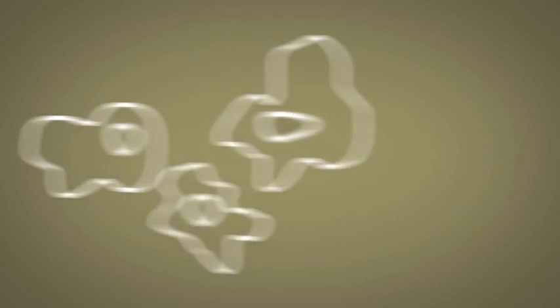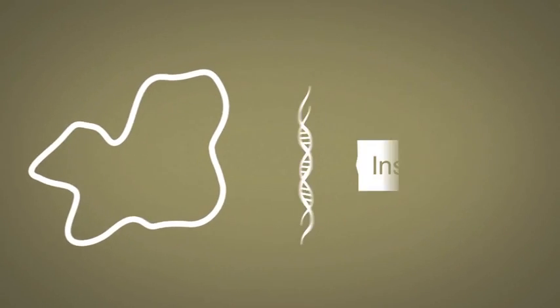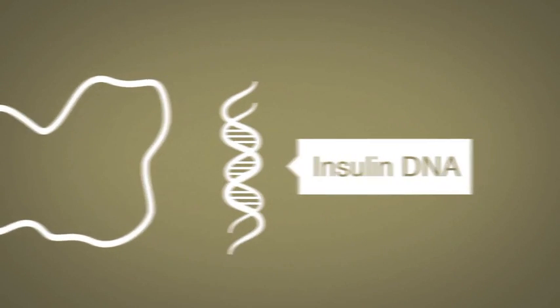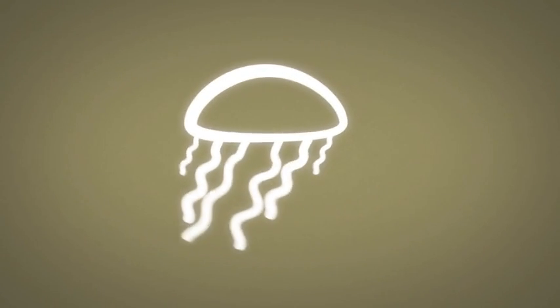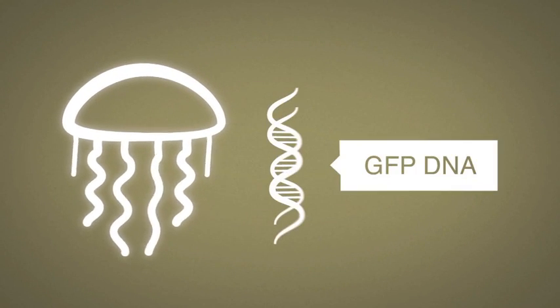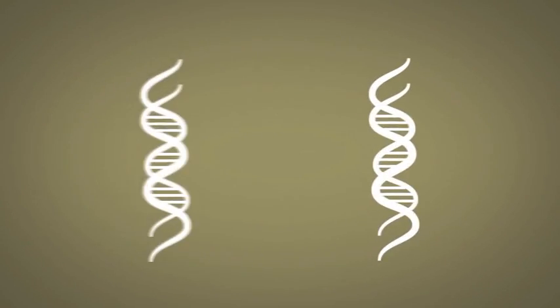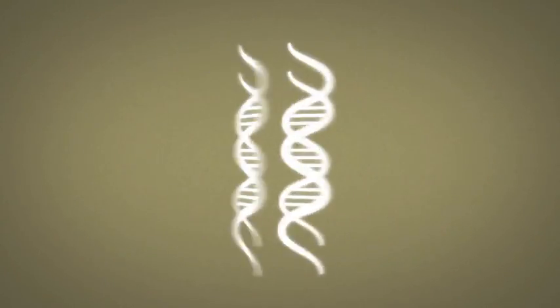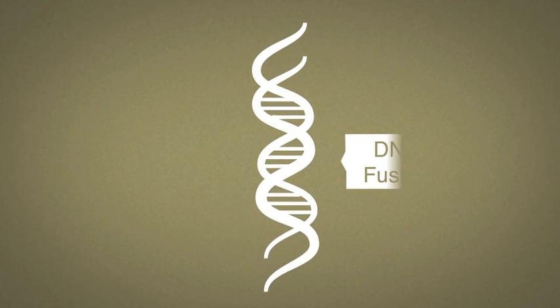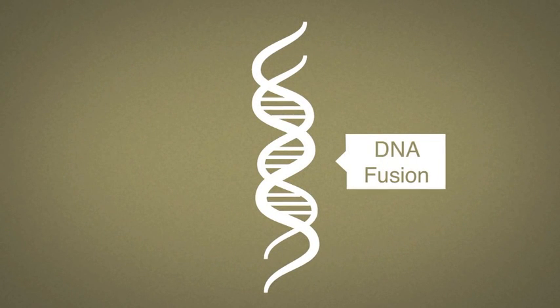We extract the DNA encoding insulin from a pancreatic cell. Similarly, we extract the DNA that makes green fluorescent protein from the jellyfish. These two DNA sequences are then joined to create one DNA sequence that will encode our fluorescent fusion protein.